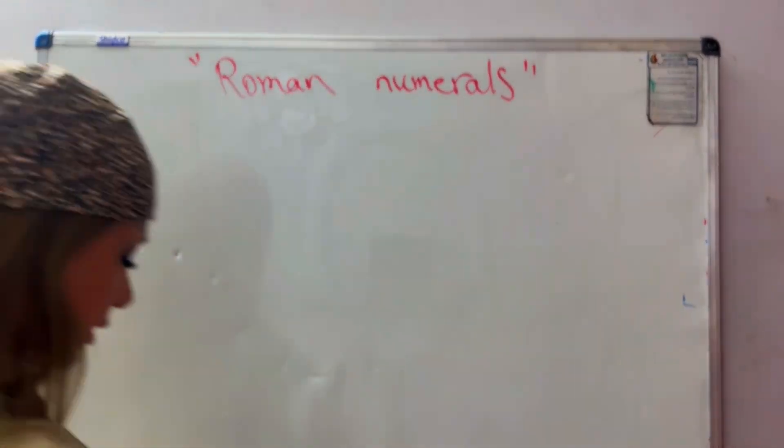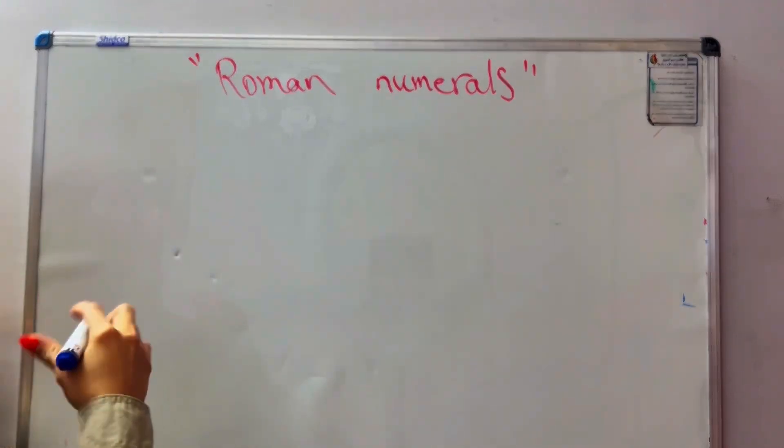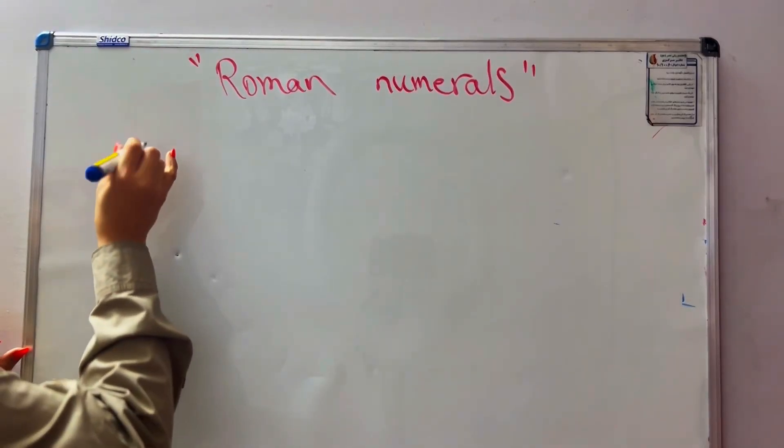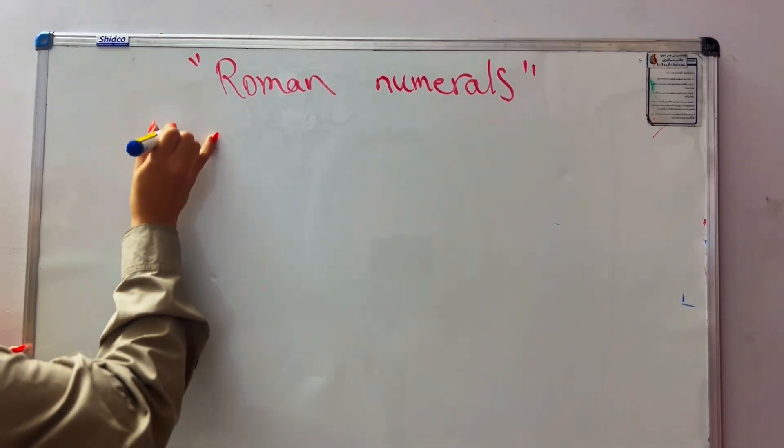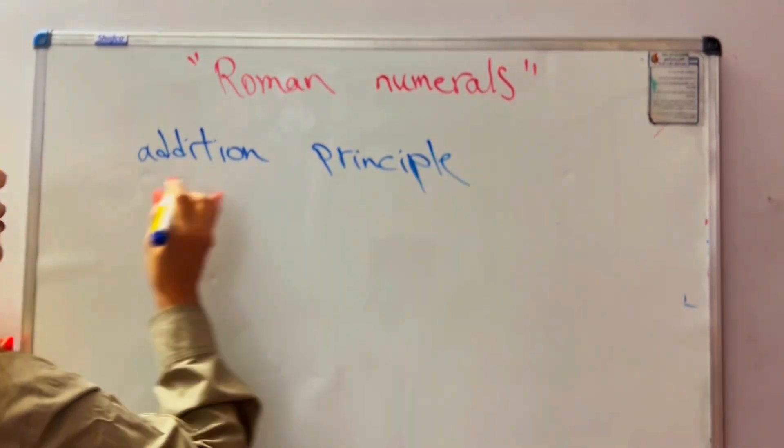Rule number two and three I should say together because they are important and related. Rule number two is addition principle, and rule number three is subtraction principle.